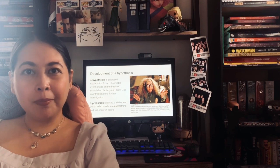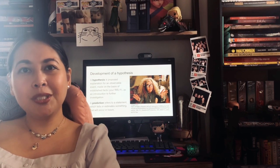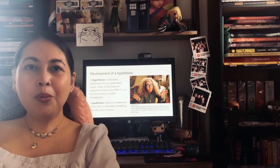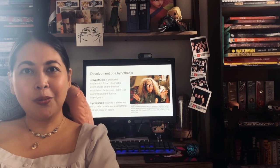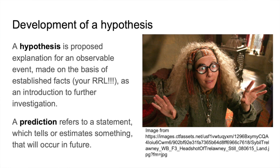Once you've stated your research problem, it's best to identify your hypothesis as well. Creation of a hypothesis can be very tricky, so one thing I would like to emphasize is the difference between a hypothesis and a prediction. A hypothesis is a proposed explanation of a phenomenon based on previous research — this is where the RRL is very important — and it is falsifiable through the research that you're going to do. A prediction, on the other hand, is an estimation or approximation of what will happen to an organism or to an event given a certain set of parameters.